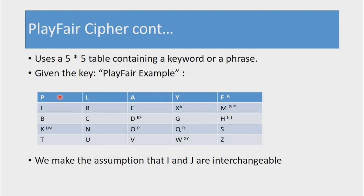You start by listing P-L-A-Y-F, and then the next letter is A, but since we already have an A in the initial cells, we don't list it again. You may list it as a superscript just to indicate that letter is present. When a letter occurs for the second or third time, you simply don't fill it in again. So we list 'Playfair' then proceed to list 'example' — E-X, A is already listed, M, P is already listed, L is already listed, and E is already listed.